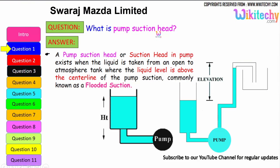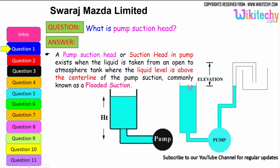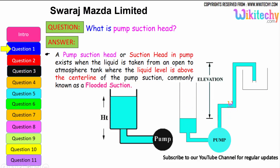What is pump suction head? A pump suction head exists when the liquid is taken from an open atmospheric tank where the liquid level is above the center line of the pump suction, commonly known as flooded suction. Automatically, the pump suction will try to pick the water or any liquid from one area to another based on atmospheric pressure.